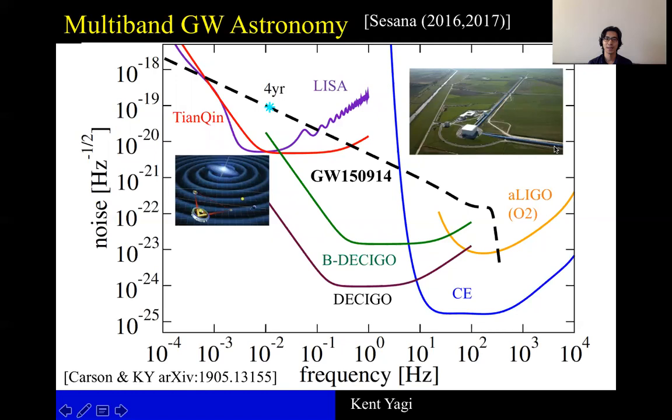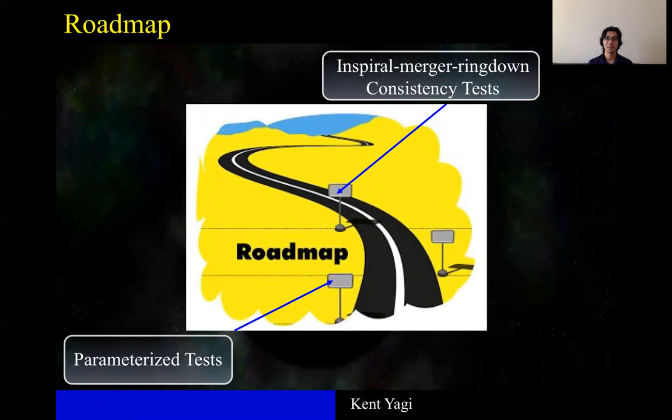So I'd like to use this kind of multi-band observations to prove GR, and I'd like to focus on two specific theory agnostic tests of GR.